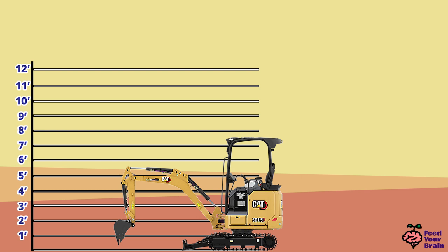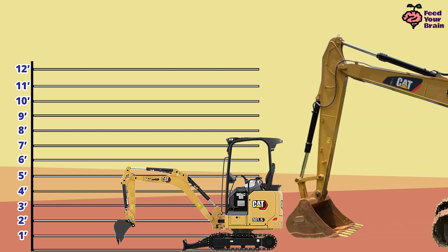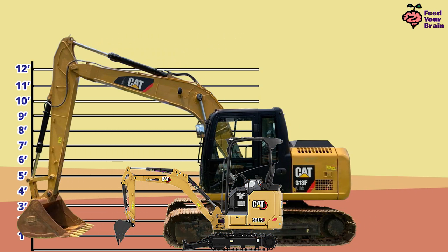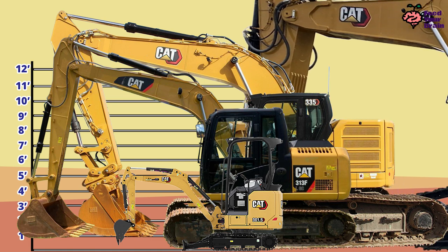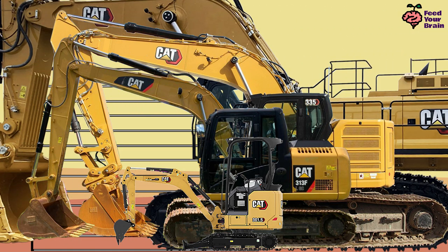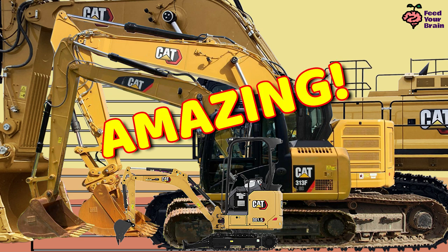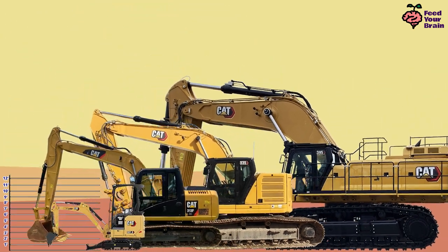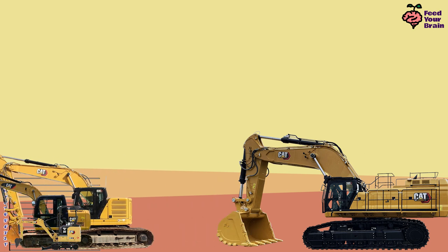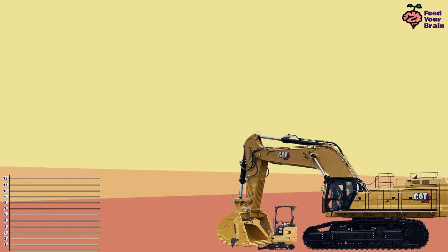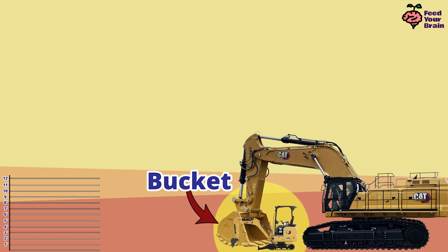Let's bring back the other excavators and look at them all together. First is model number 313, the small-sized excavator. Next is model number 335, the medium-sized excavator. Then is model number 395, the large-sized excavator. Wow, what a difference in sizes! Look how small the mini-excavator is compared to the rest. The mini-excavator is as wide as just the arm of the large excavator, and the bucket of the large excavator is bigger than the entire mini-excavator.